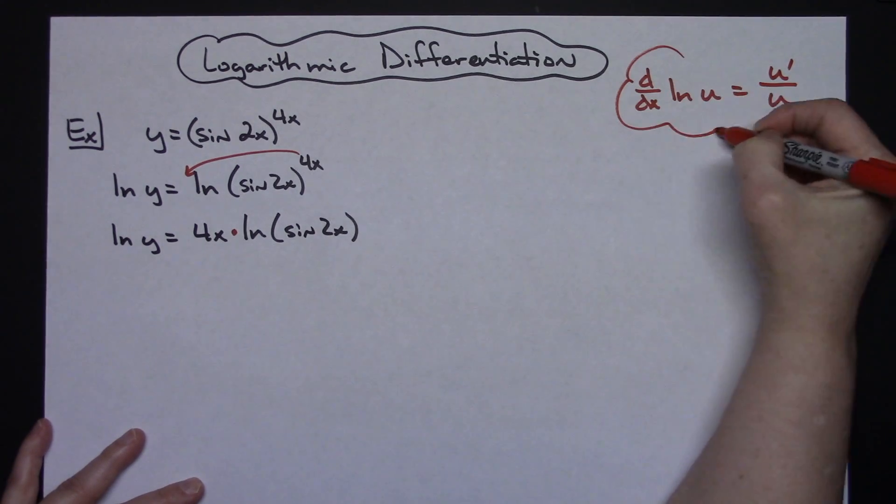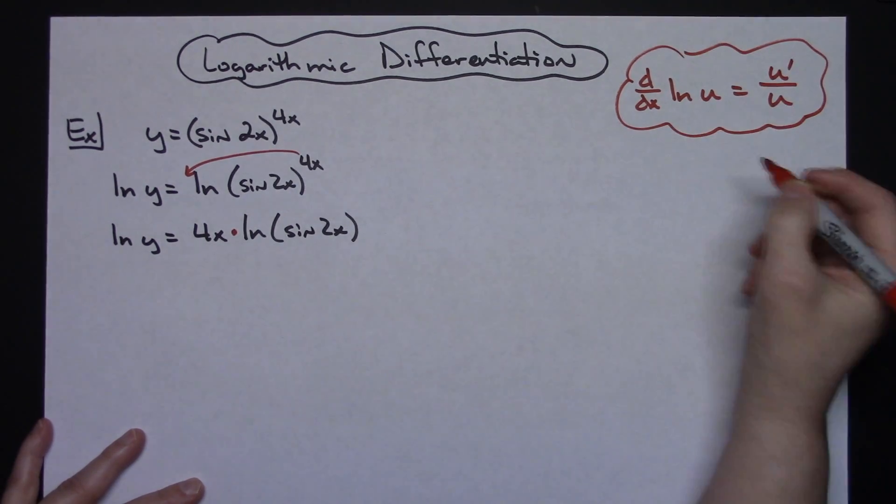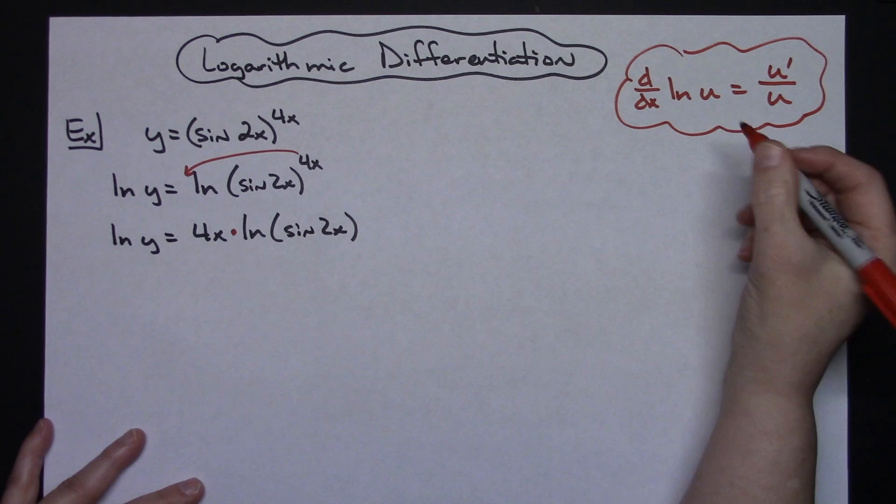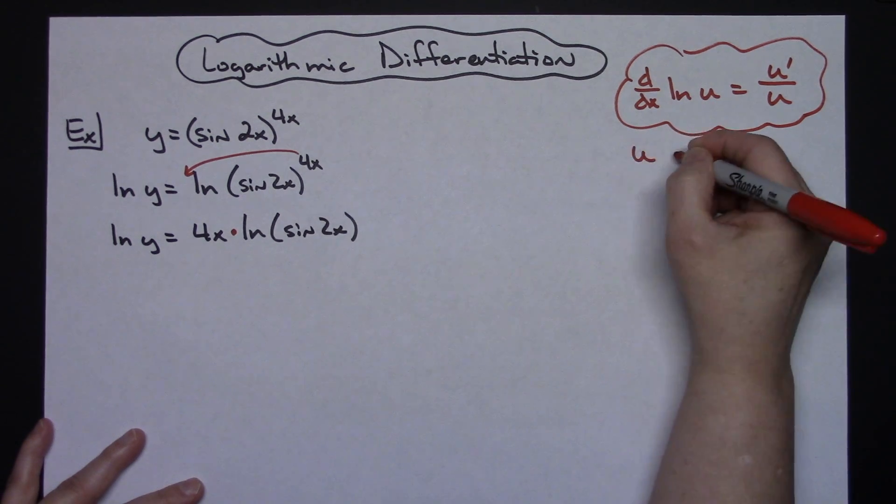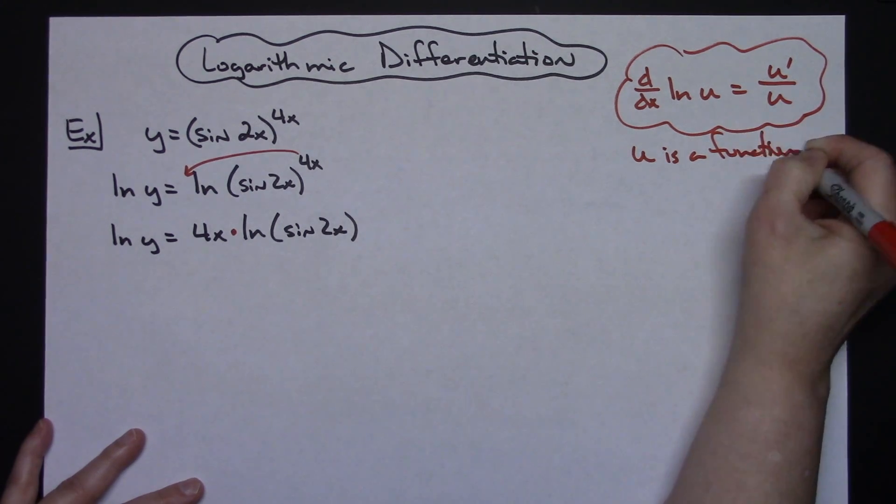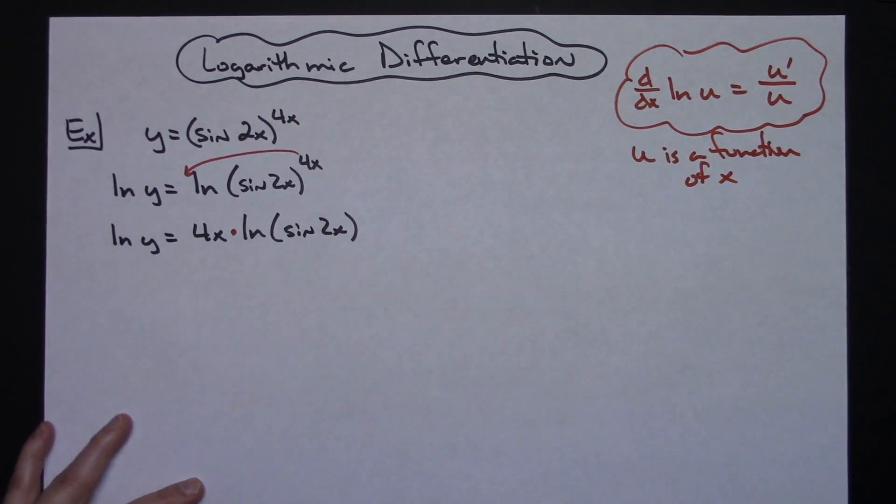That's your formula for taking the derivative of the natural log function. Keep in mind here that u is a function of x in that formula right there.